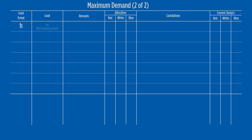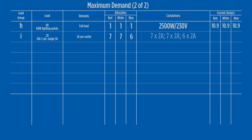We must now calculate the loading for communal services, and add this to the unit loading to calculate our maximum demand for the installation. Load group H is communal lighting, with an allocation of full connected load. The total communal light loading is 7,500 watts. Splitting this over three phases gives 2,500 watts per phase and a loading of 10.9 amps. Load group I has 20 socket outlets. Splitting these into three and applying a loading of 2 amps per outlet produces a phase loading of 14 amps.